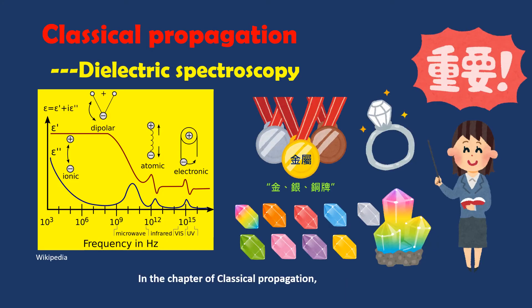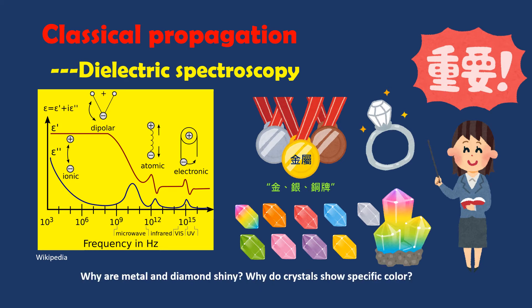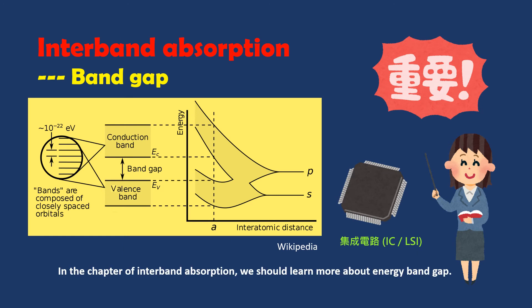In the chapter of Classical Propagation, we are going to look into questions like: Why are metals and diamonds shiny? Why do crystals show specific colors? We should understand the dielectric spectroscopy. In the chapter of Inter-band Absorption, we should learn more about the energy band gap.